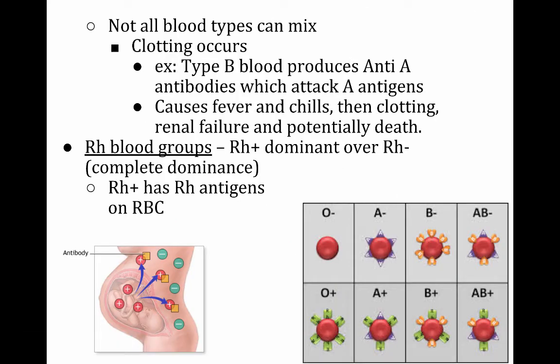So not all blood types can mix. If you infuse the wrong blood type into someone, their body will attack those cells as foreign bodies. So if you have type B blood, it produces anti-A antibodies, which will attack A antigens, which would be present if you tried to infuse type A blood. And that can cause someone to feel very ill. It can even cause kidney failure and possibly death.